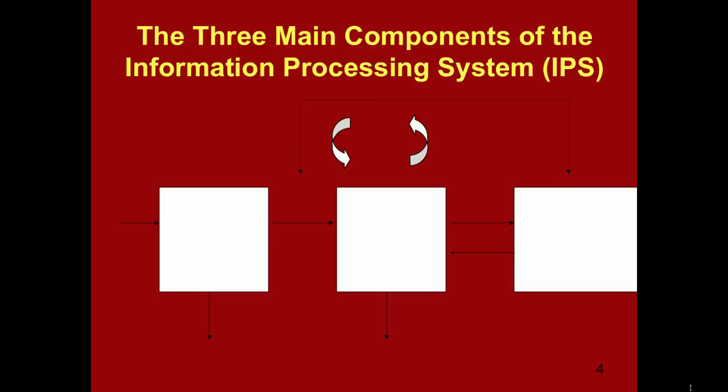Let's take a closer look at the information processing theory. This is the theory that will be the foundation of everything that we learn in EDUC 140. According to the theory, there are three main components to the information processing system: short-term sensory store, working memory, and long-term memory. Let's take a closer look at these three components.